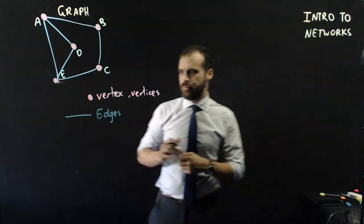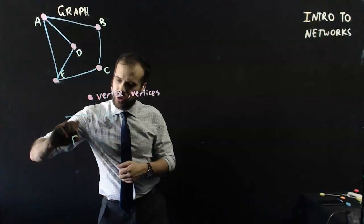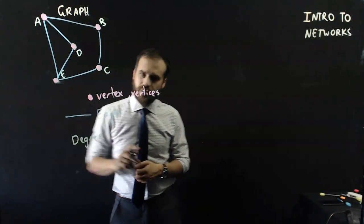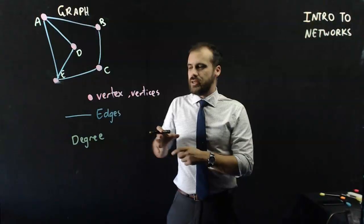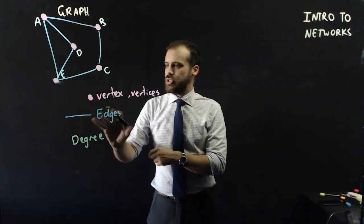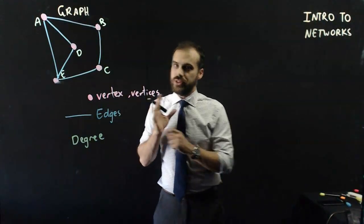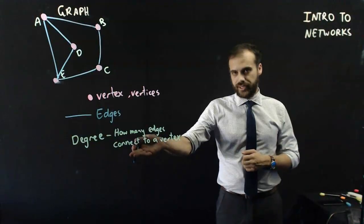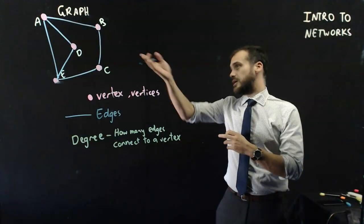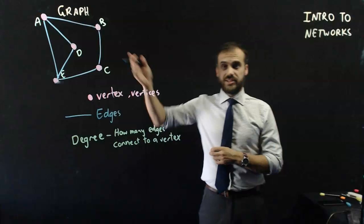So next up, we have an important piece of terminology here, and the terminology is degree. Now a degree is how many edges connect to a vertex. Okay, so let's look at A, for instance, at town A.